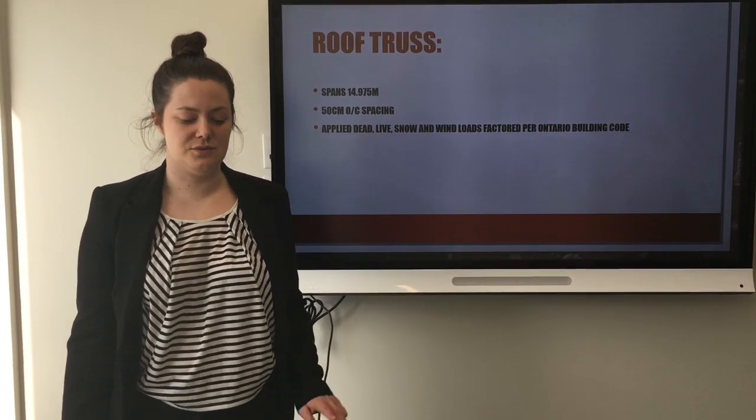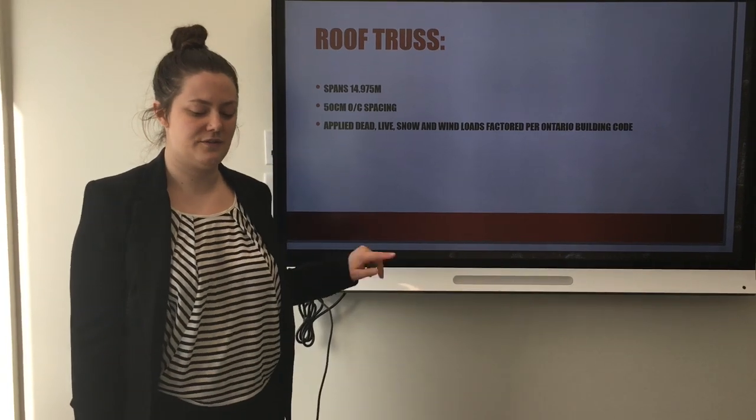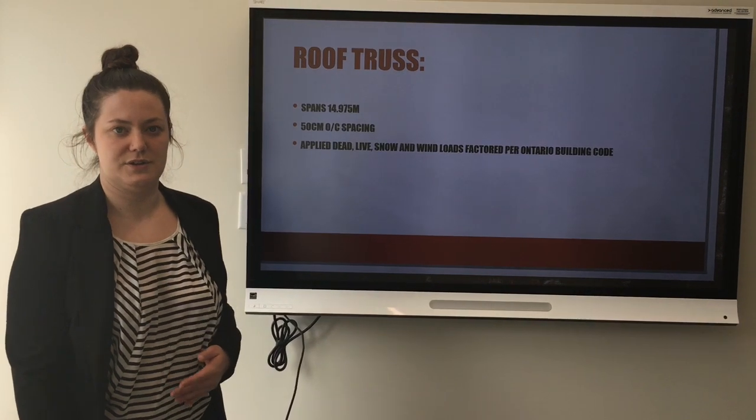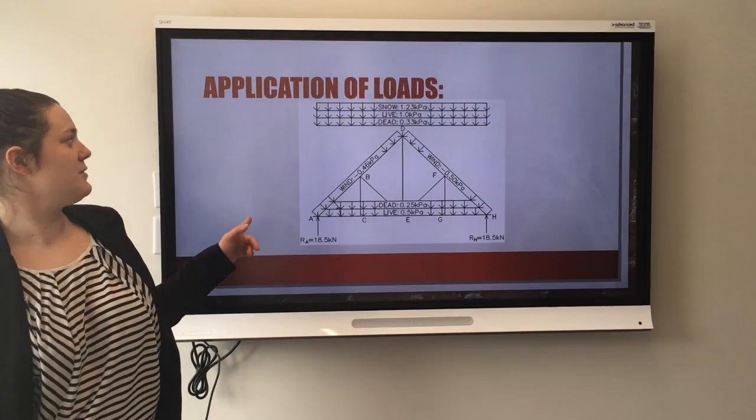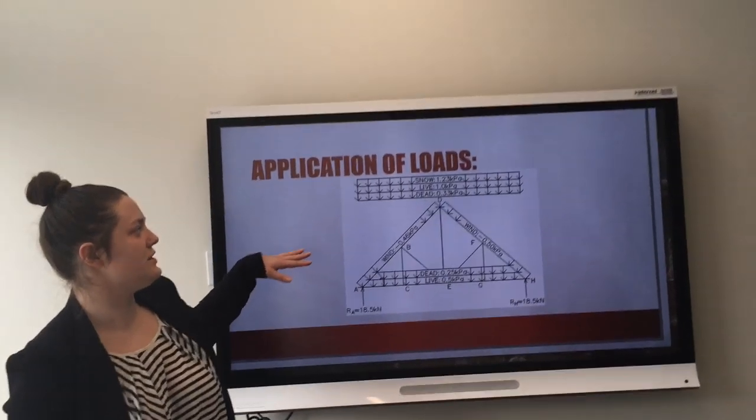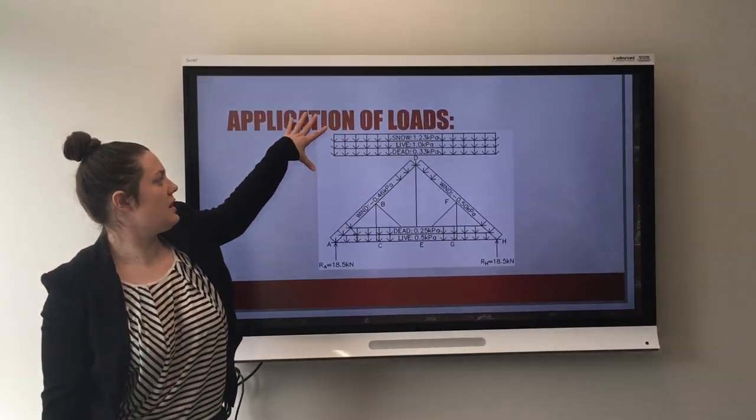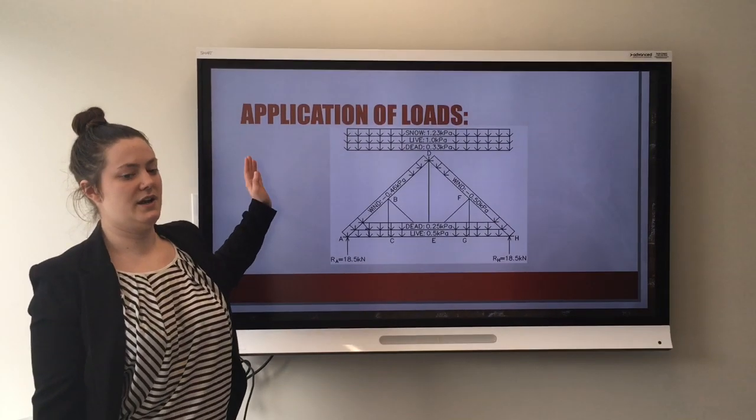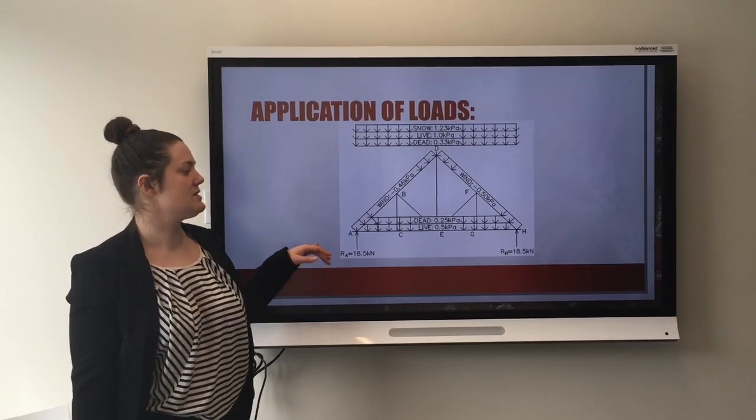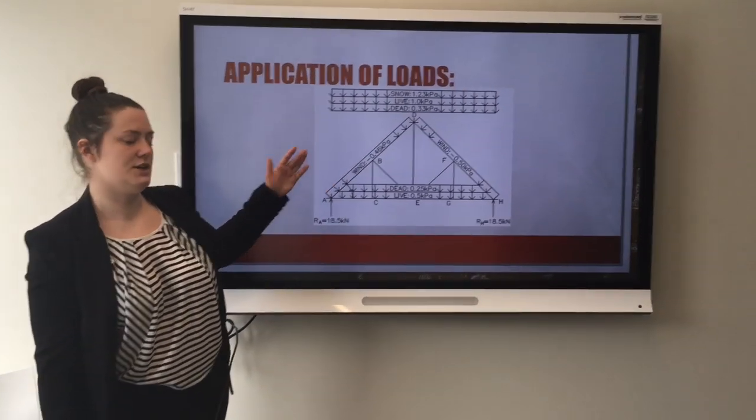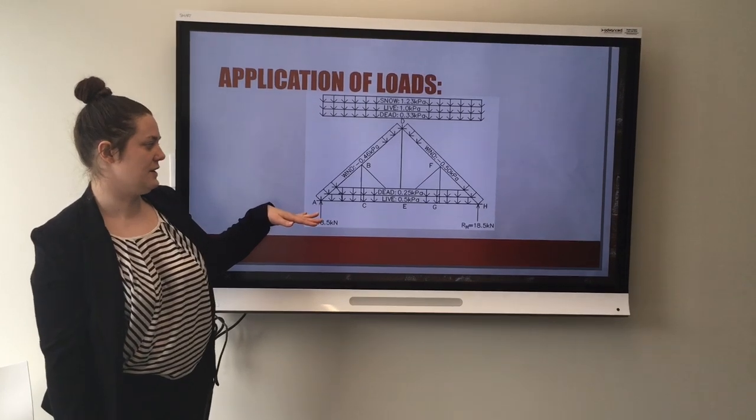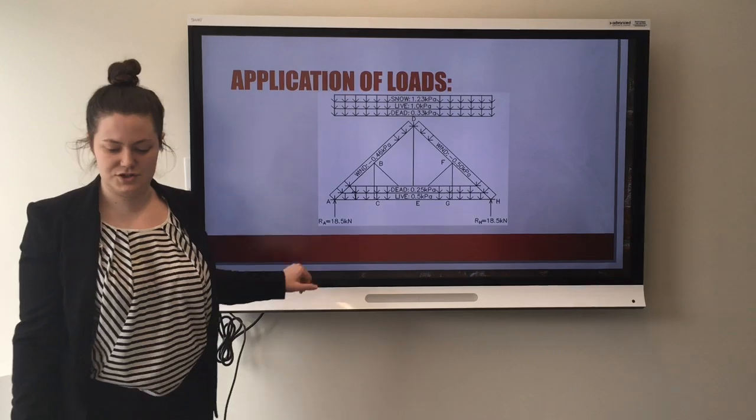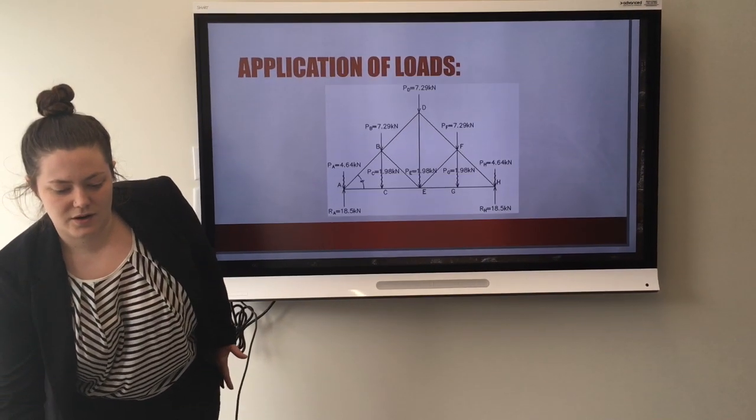We have applied a dead load, two live loads, one for the exterior, one for the interior, snow and wind loads all factored per the Ontario Building Code. As you can see from this diagram, the loads acting on the exterior of the truss were applied as UDLs acting downwards on the truss, the wind was applied as UDLs acting perpendicular to the truss members, and the interior loads, the installation and the interior attic live occupancy load were applied on the inner member of the truss.